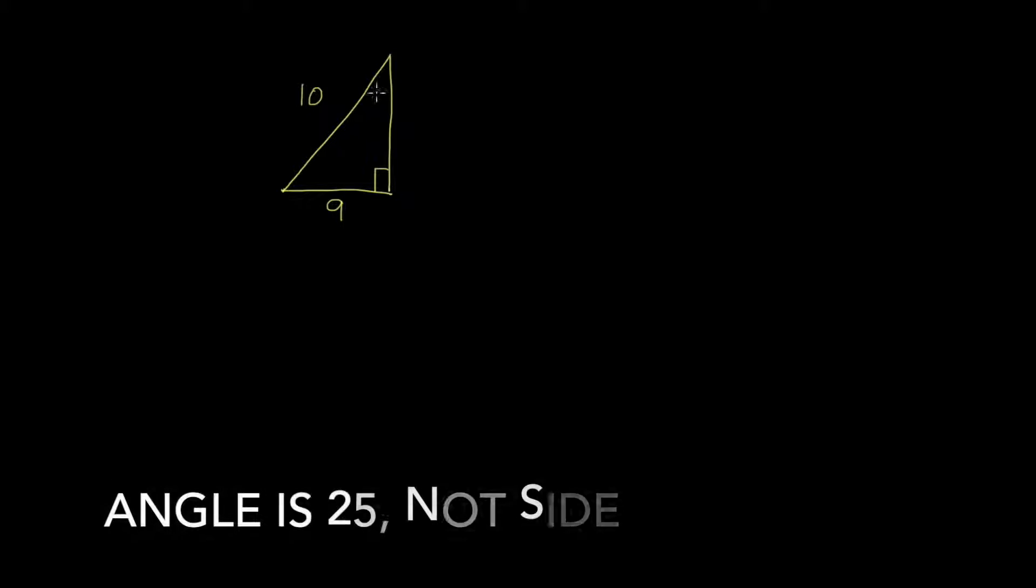So the first one, if I have a triangle, a right triangle, and I know that my hypotenuse is 10, this side, let's say, is 9, this side is 25. I want to know what this angle x is, and also what cosine of x is.